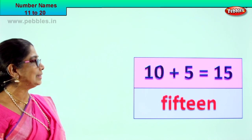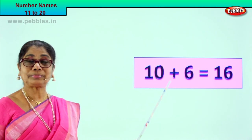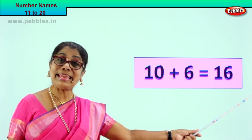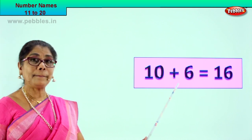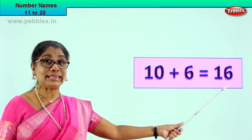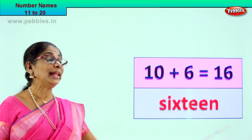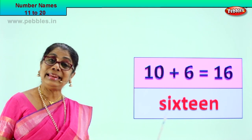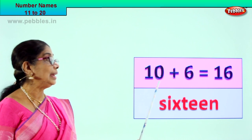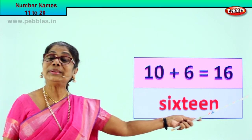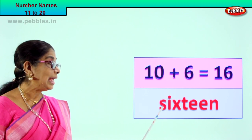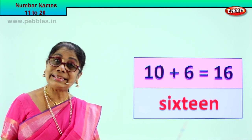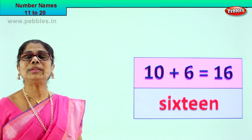Let's go to our next exercise. Look what we have — 10 plus 6 is equal to 16. Read it again — 10 plus 6 is equal to 16. How do we write in words? S, I, X, T, E, E, N. 16 in words. 10 plus 6 is equal to 16, and in words we write it as S, I, X, T, E, E, N. 16. Very good!